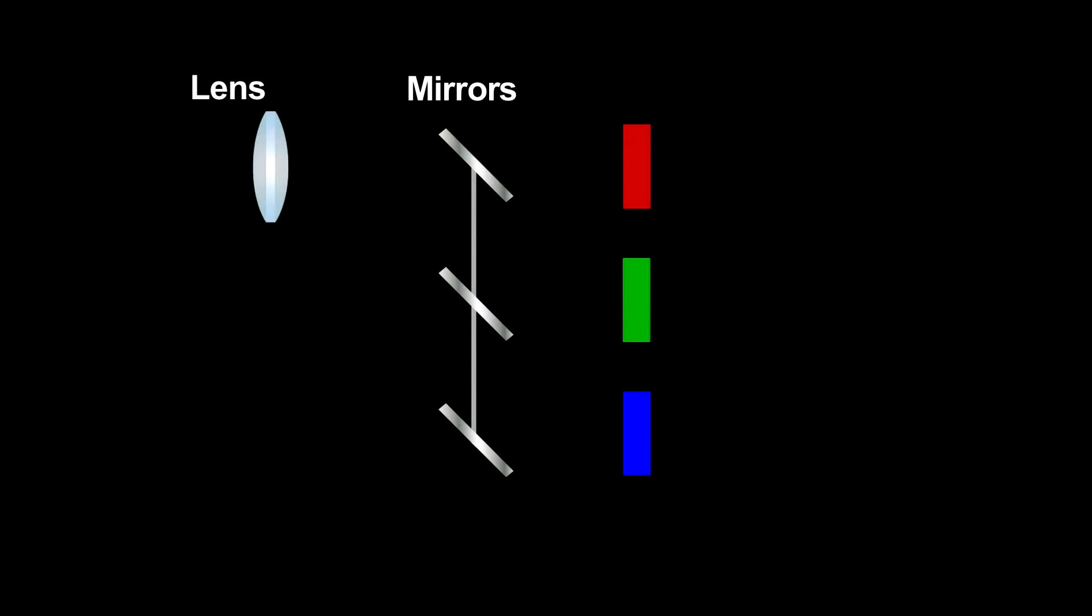Now, one last important question. How do we get color? A CCD only detects total light intensity, which is useful for producing a black and white image. But for a color photograph, we need to separate the entering light into red, green, and blue.